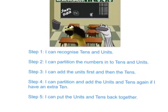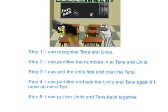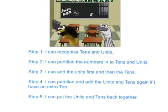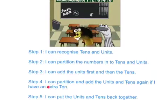So here are the steps to success. Step one: I can recognise tens and units. Step two: I can partition the numbers into tens and units. Step three: I can add the units first and then the tens. Step four: I can partition and add the units and tens again if I have an extra ten. Step five: I can put the units and tens back together.